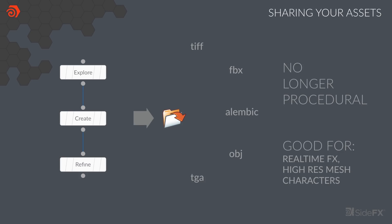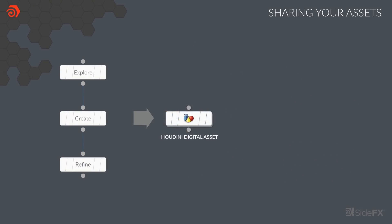Of course, this approach can be good for some workflows, such as creating real-time effects, generating high-res meshes, or exporting character rigs. But if you want to retain the procedural nature of the network, then we need a different approach. For Houdini artists, this means collapsing your network into a Houdini digital asset. Now all the original nodes and networks exist inside the asset.